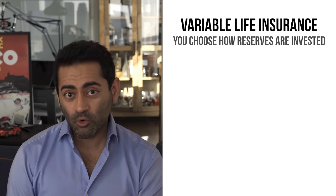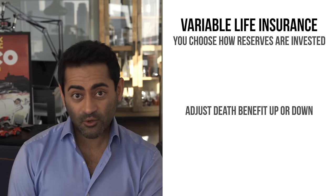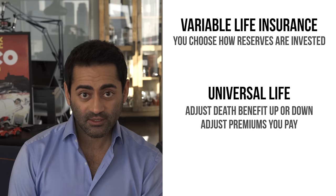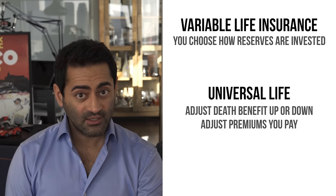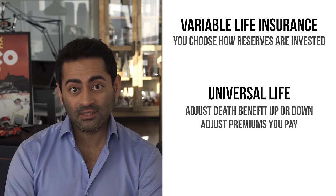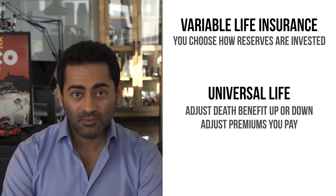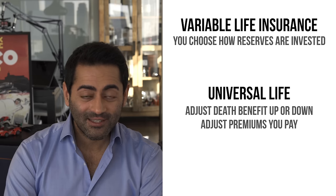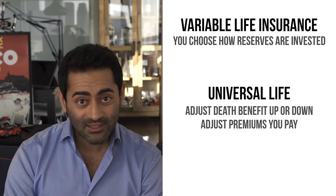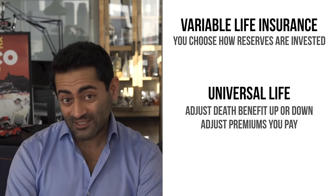If you also want more control of other variables in your policy, like changing your death benefit amount over time or the premiums that you pay in a given year, you would look at a universal life policy. In some countries like the United States, you can buy universal life policies with a wide range of options for how the reserves are invested — from no control to complete control, like a variable universal life policy. In some other countries, universal life is used mostly in reference to the ability to invest the reserves as you want, so just be mindful to do some digging about the specifics where you live.